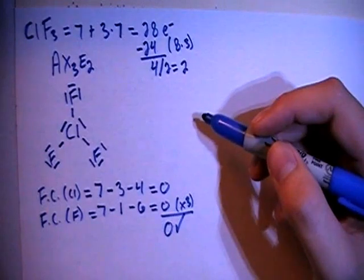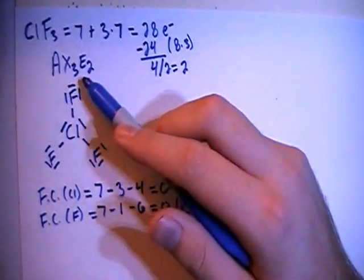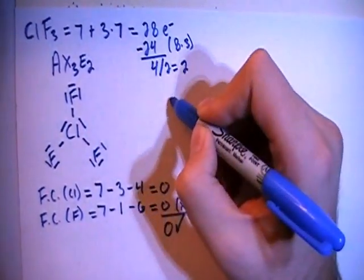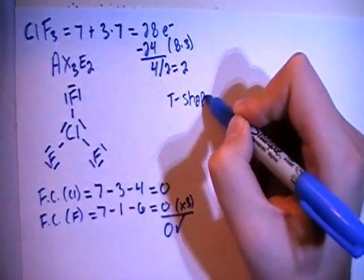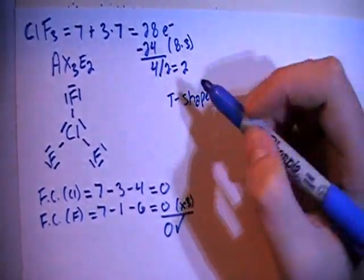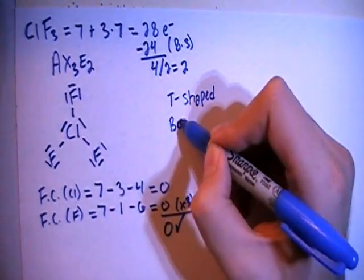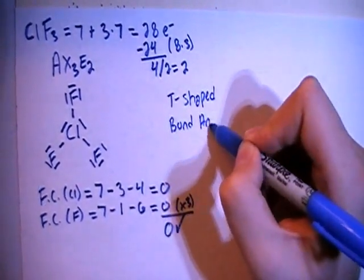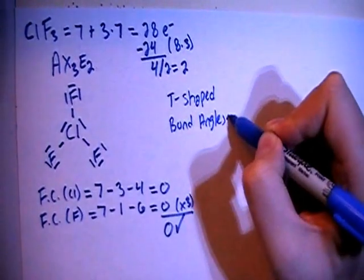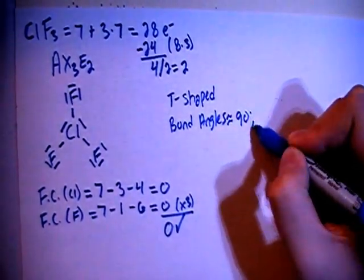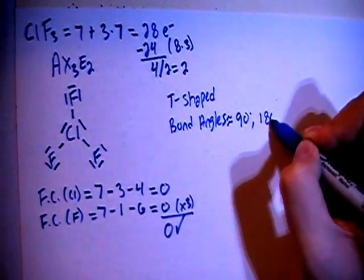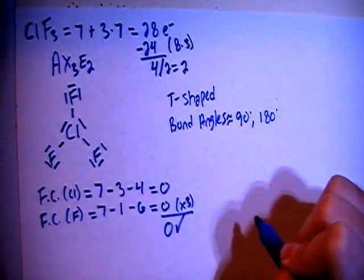Now, in terms of actual shape, when you have the AX3E2 structure, that means that you are going to have what's called a T-shaped molecule. And when you have the T-shaped molecule, the bond angles are going to be approximately equal to 90 degrees as well as 180 degrees in different locations.